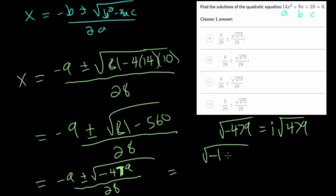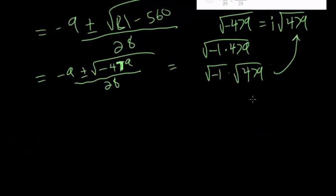You're making it minus 1 times 479, and then since you have a product you can separate it into its two square roots multiplied together, and now you end up at this step since square root of minus 1 is just i. So we can simplify this just a little bit further.